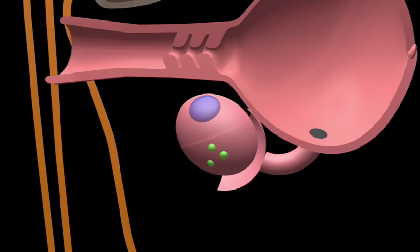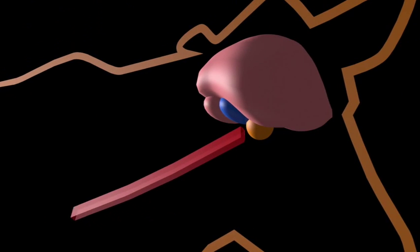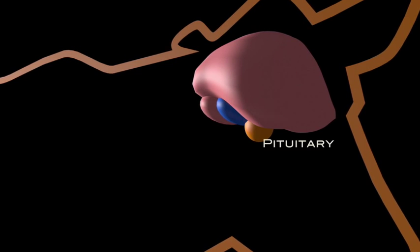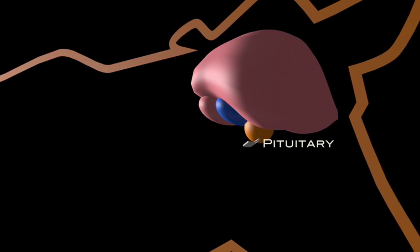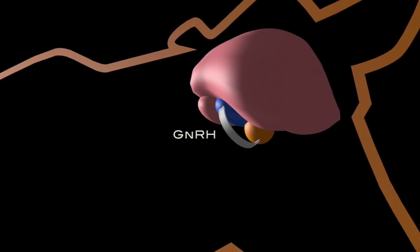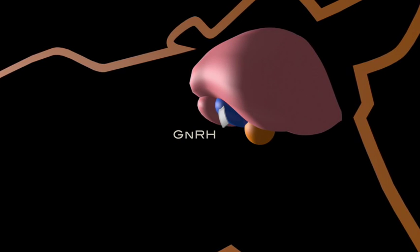The hormone that causes initial growth of the follicles, follicle stimulating hormone or FSH, and the hormone that causes ovulation of the follicle, LH, both come from the pituitary. The hormone that causes secretion of LH, GnRH, is released by a part of the brain that is near the pituitary gland called the hypothalamus.